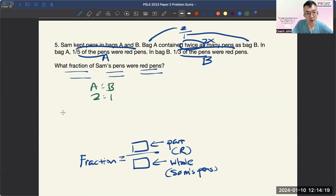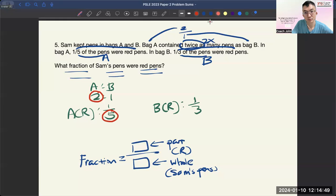So in bag A, for the red pens, we have 1 over 5. Then for bag B, for the red pens, the fraction is 1 over 3. So now let's look at the repeated identity. This should be the same, this should be the same as well. And yet, this is twice of this. So the easiest way for me will be, let's make them the same.